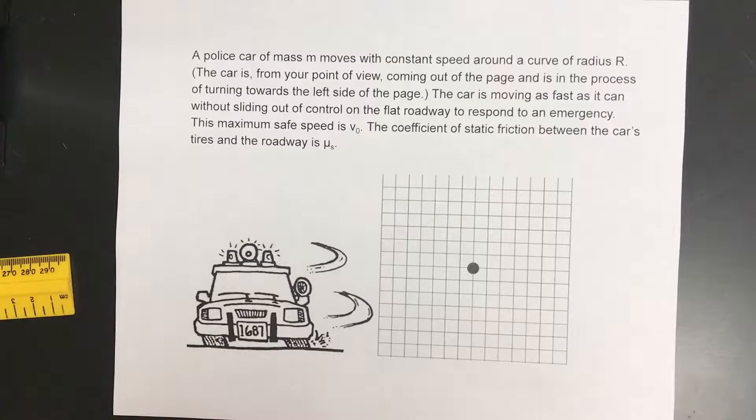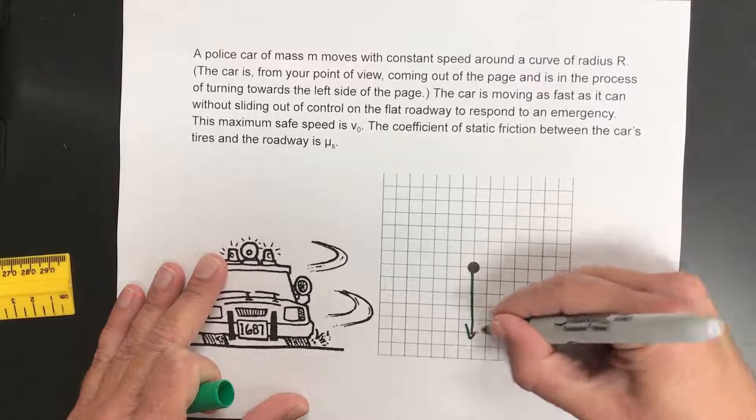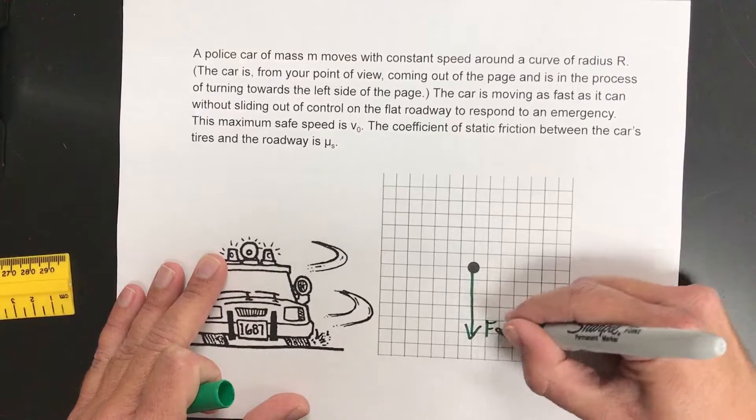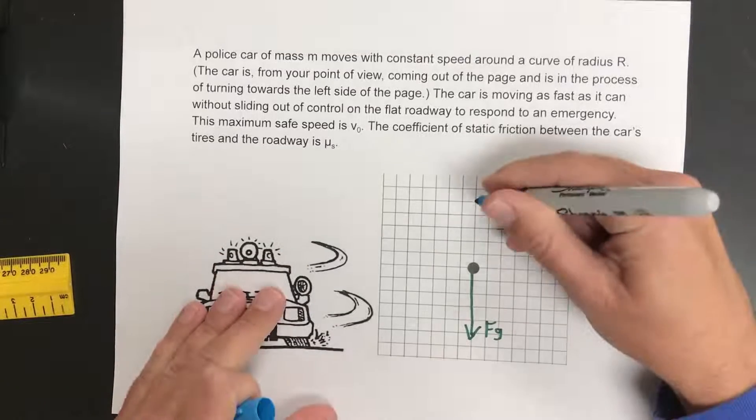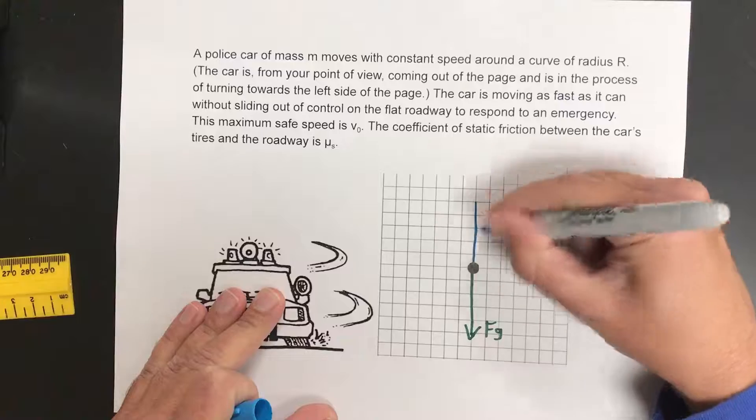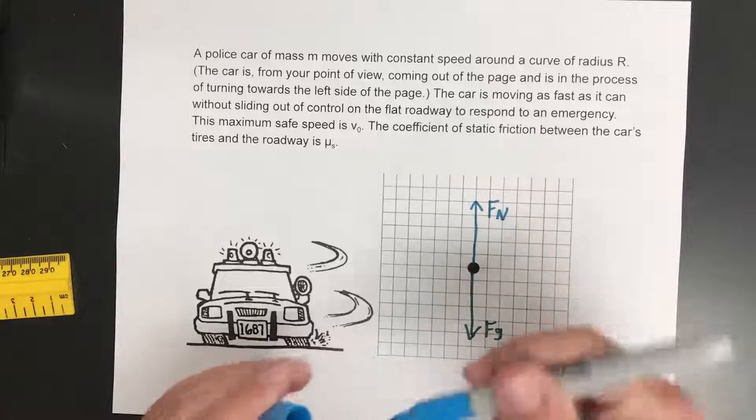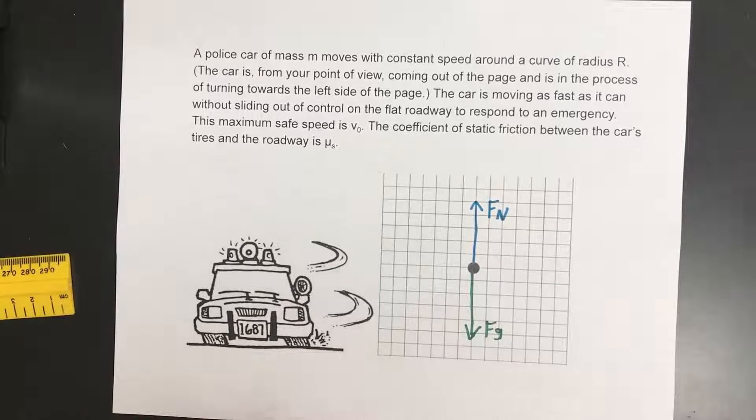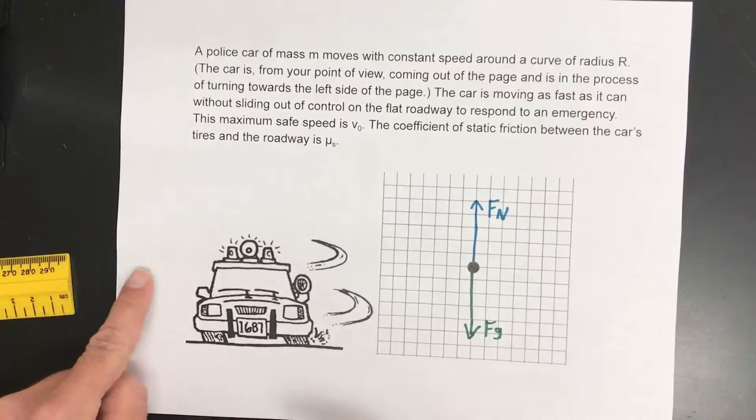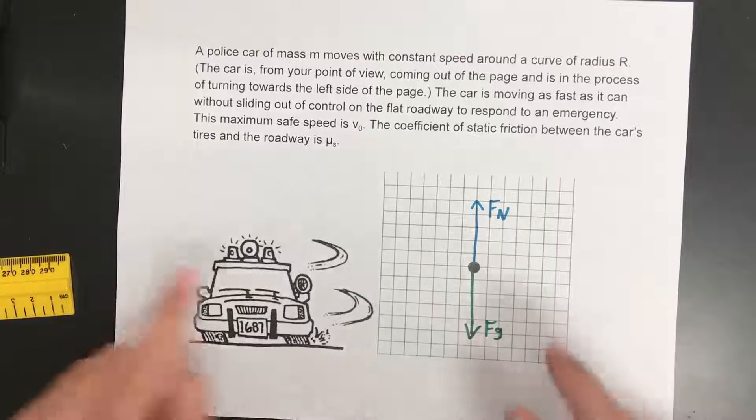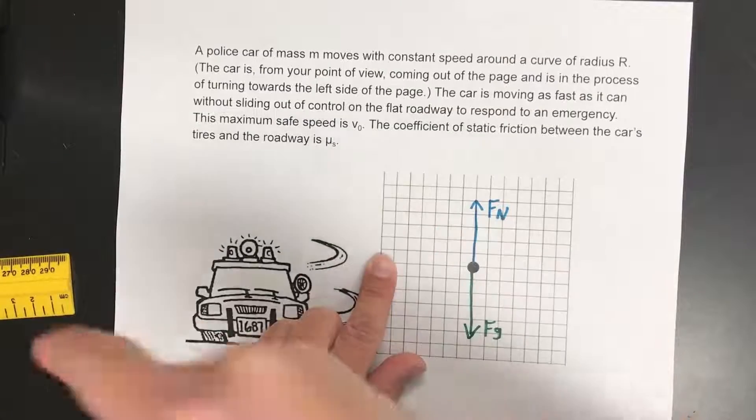So very first thing they want free body diagram. So let's go ahead and add some gravity as always. Label that FG. We'll of course have the normal force up. It's got to be equal in value because there's no acceleration in the y direction at all. So what about the next force? What's actually pushing it in a circle? The center of the circle is over here on our free body diagram and it's turning like that.